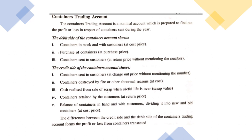In a particular year, if a purchase of containers is made, the purchase price is recorded for that purchase. Containers sent to customers are recorded at returnable price, and a provision should be created every year for containers sent to customers during delivery of goods. This provision is called 'containers sent to customers' and is recorded at returnable price, without mentioning the number in the containers trading account.